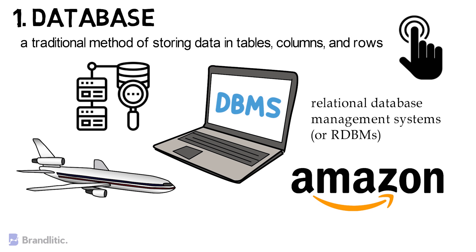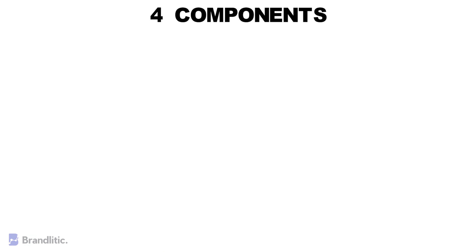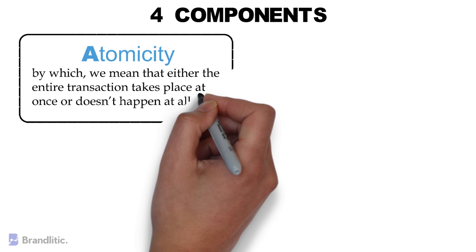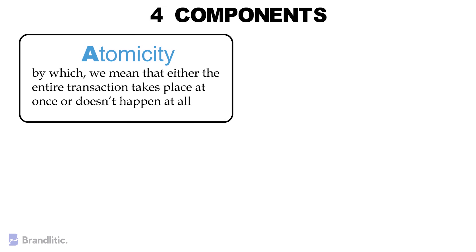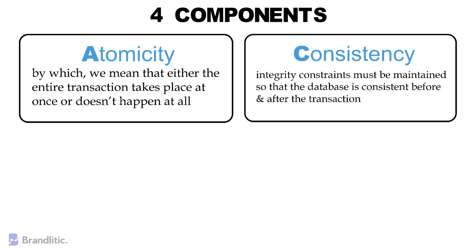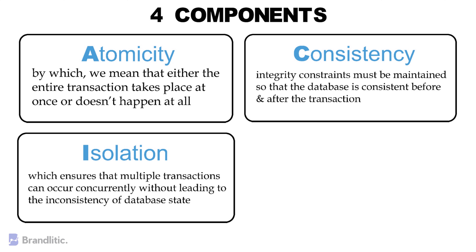To ensure that transactions have integrity, databases need to have these four components. First, Atomicity — either the entire transaction takes place at once or it doesn't happen at all. Second, Consistency — integrity constraints must be maintained so that the database is consistent before and after the transaction. Third, Isolation — which ensures that multiple transactions can occur concurrently without leading to inconsistency of the database state.